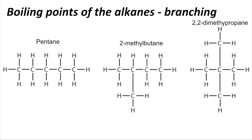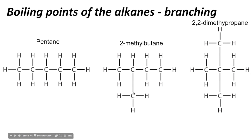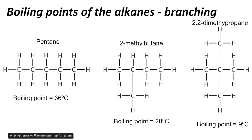Now let's look at the effect of branching on the boiling point of alkanes. These are structural isomers — they've got identical numbers of carbons and hydrogens: five carbons and ten hydrogens — but the degree of branching is different. One has no branching, one has one methyl branch, and one has two branches. You can see that the one with the greatest branching has the lowest boiling point.